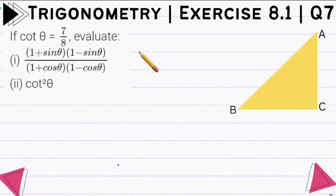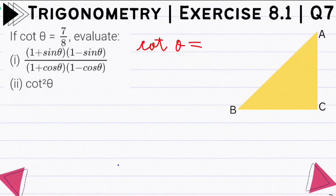Hello everyone. This is question 7 of exercise 8.1 class in trigonometry, and the question is: if cot theta is equal to 7 by 8, you have to evaluate or find these two values. So see how we do it.